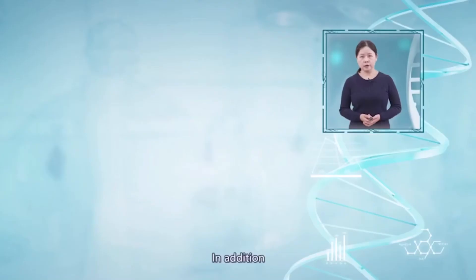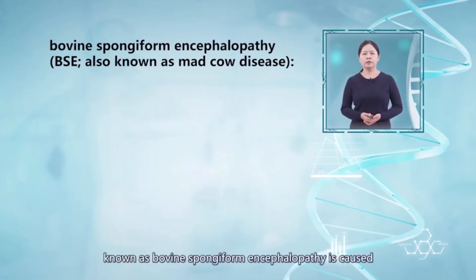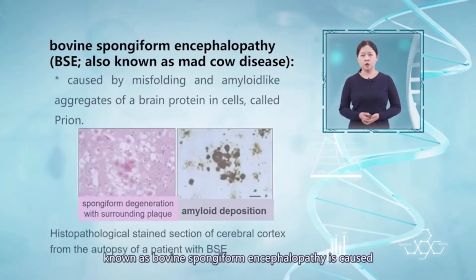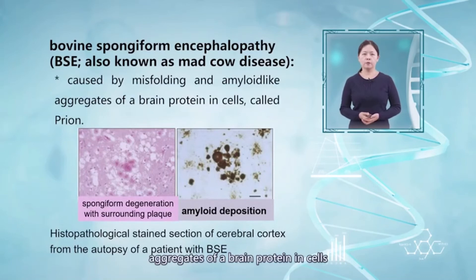In addition, a special degenerative brain disease known as bovine spongiform encephalopathy is caused by misfolding and amyloid-like aggregates of a brain protein called prion.